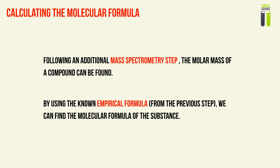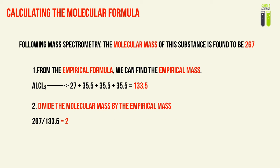The molecular formula, on the other hand, would usually be calculated following a mass spectrometry step, where from mass spectrometry we can find the molar mass of that compound. And by using the known empirical formula that we found in the previous step, we can find the molecular formula of this substance. For example, from mass spectrometry, the molecular mass of this substance is found to be 267. First of all, by using our empirical formula, we can find the empirical mass.